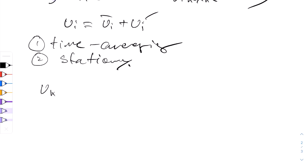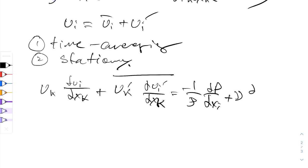So you'll get u sub k partial ui partial xk plus uk prime partial ui prime partial xi barred, which denotes average, is equal to negative 1 over the density of partial p partial xi plus nu of partial 2 ui partial xk partial x sub k. Remember k are these indices variables, so this will be equation 6.